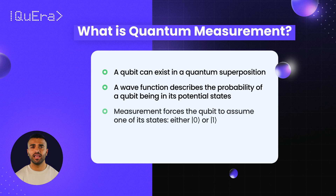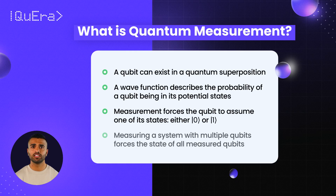Measurement collapses this wave function, forcing the qubit to assume one of its possible states, either 0 or 1. This collapse is not unique to single qubits. In quantum systems with multiple qubits, measurement collapses the entire wave function, resulting in a specific configuration of all qubits in the system.